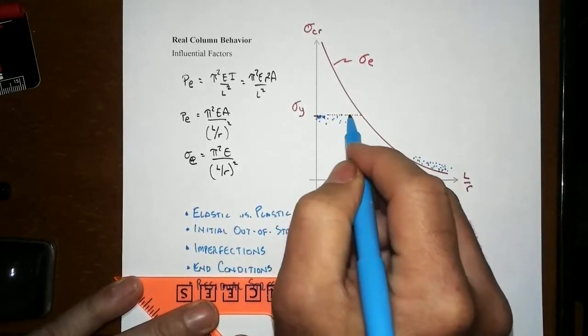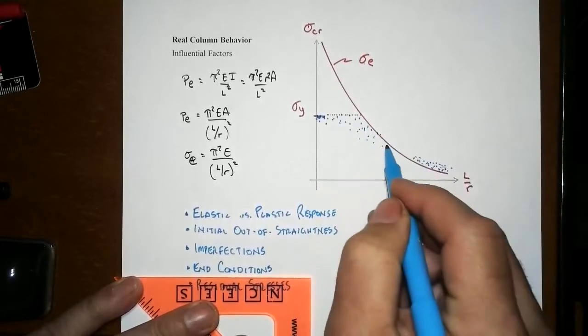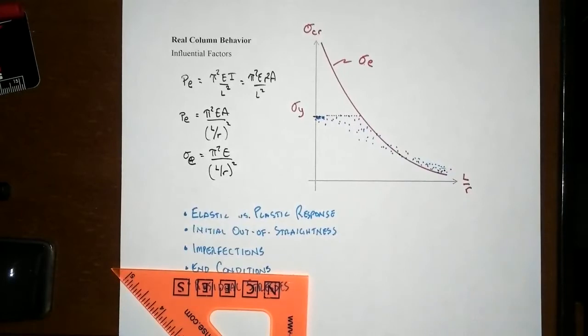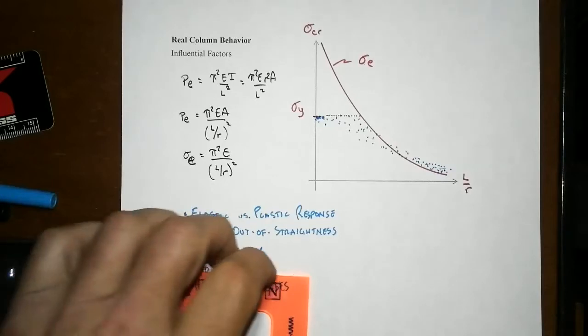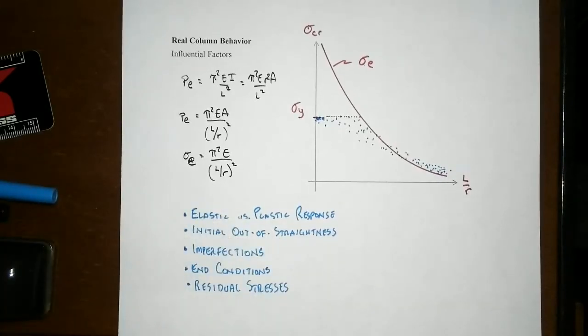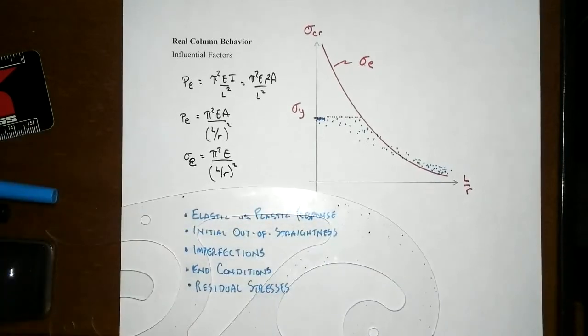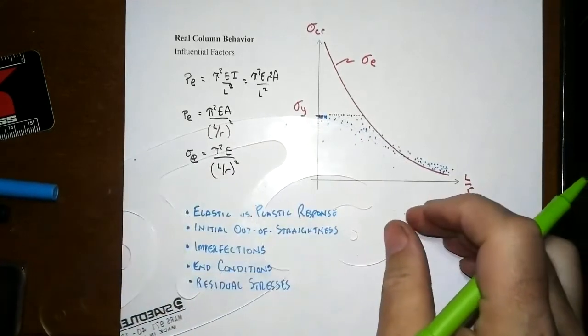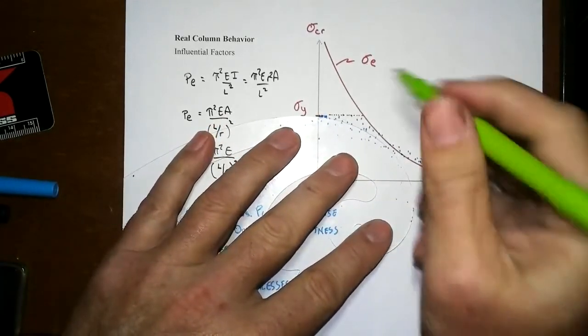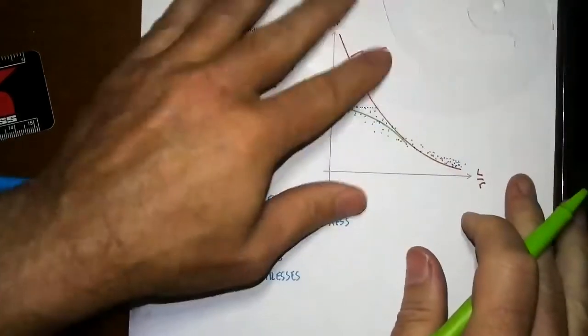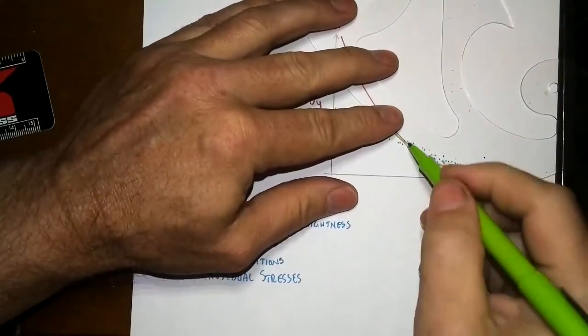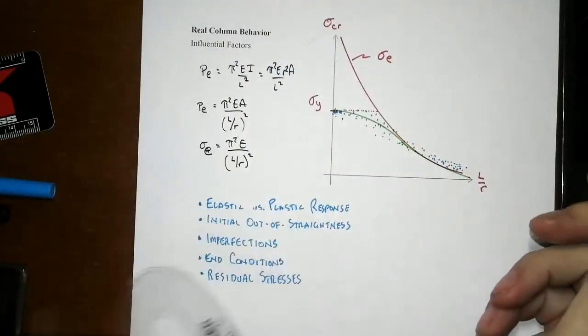The question folks were trying to address for the last hundred years is: what should be the appropriate curve that we might fit in there? It's called the column curve. It depends on the material, the industry, whether it's wood, aluminum, stainless steel, or steel. They all have different curves they like to put in here. Generally, you'll find some S shape, a ski slope. They'll try to fit the data and come up with an appropriate curve. Then they'll put a factor of safety that lowers this down.